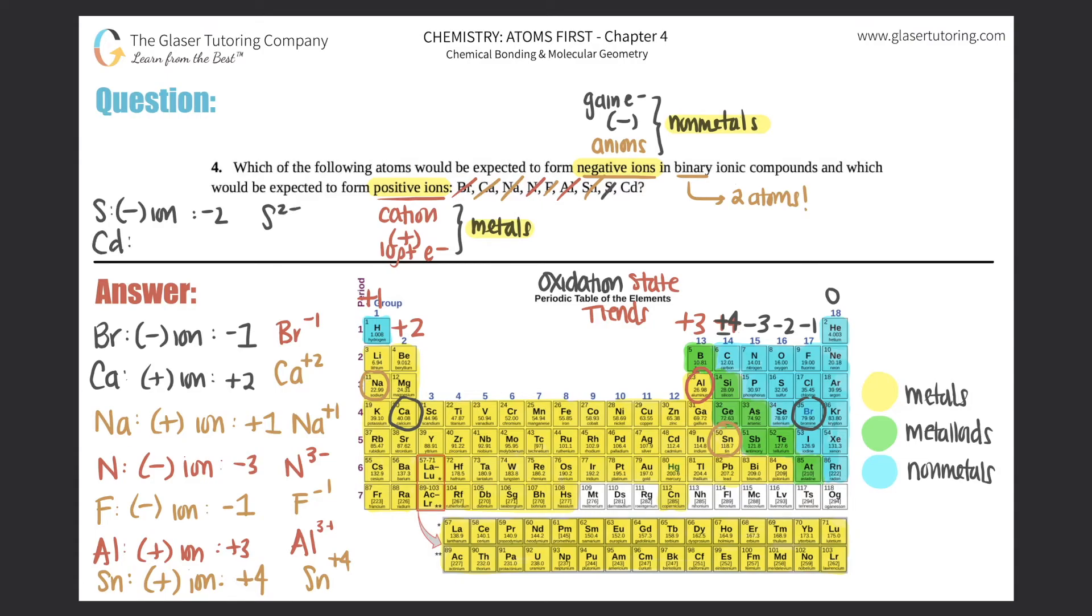Last but not least, Cd, cadmium. Cadmium is right here. Now transition metals do not have a trend for oxidation states - they transition from one state to another. However, cadmium is a metal, so what do we know about metals? Metals generally will always lose electrons, they will be positive. In this case I can just say it's a positive ion, but I don't really know what actual number it would be - maybe it could be plus one, maybe plus two or plus three. Transition metals are going to have many different oxidation states.